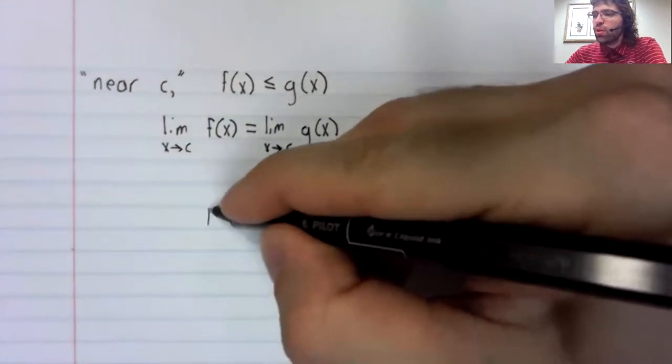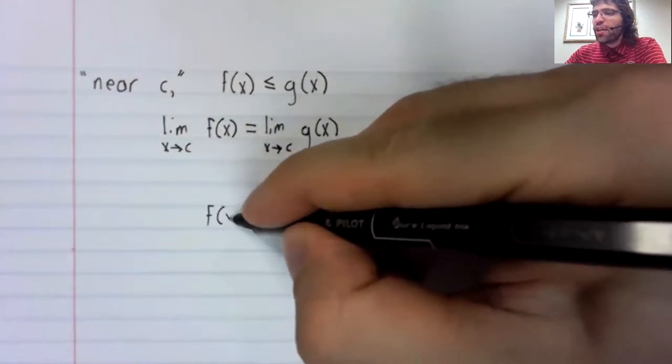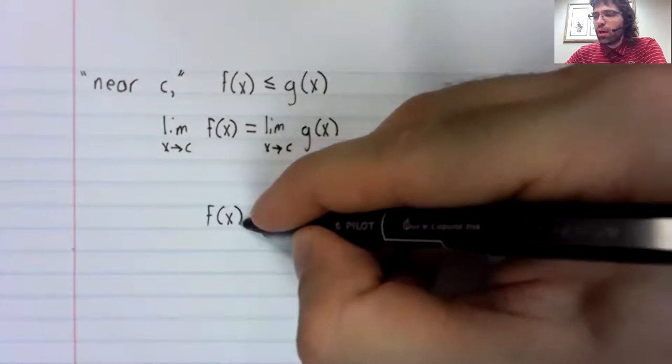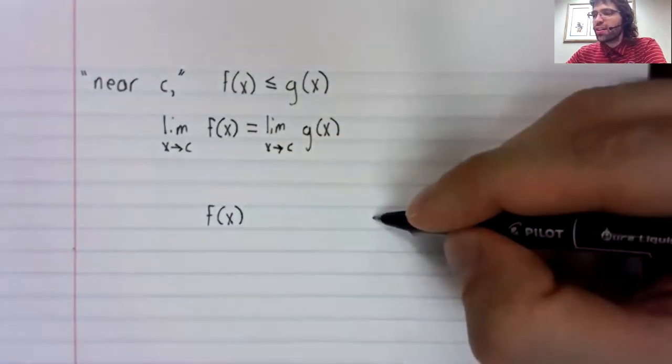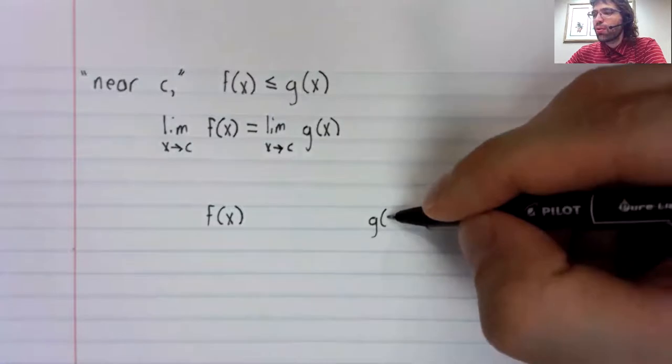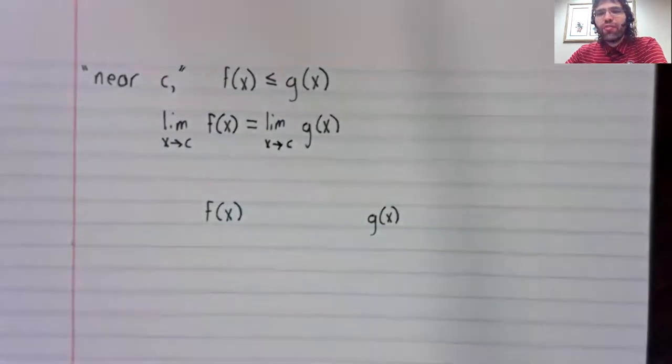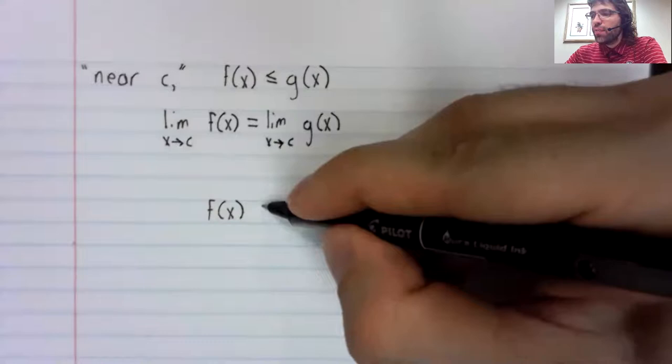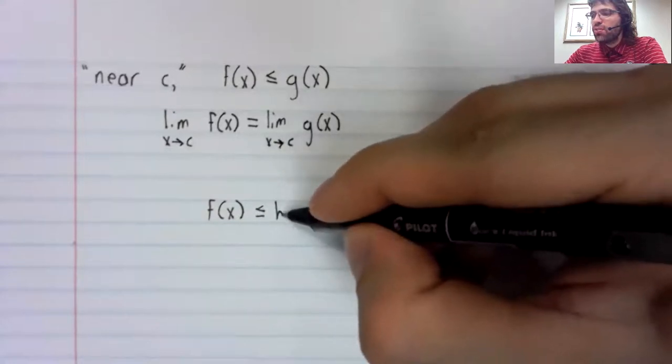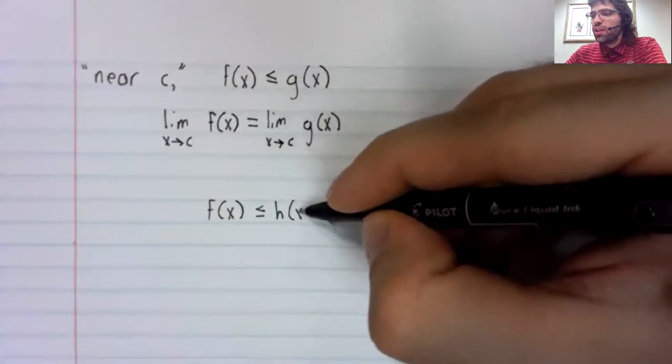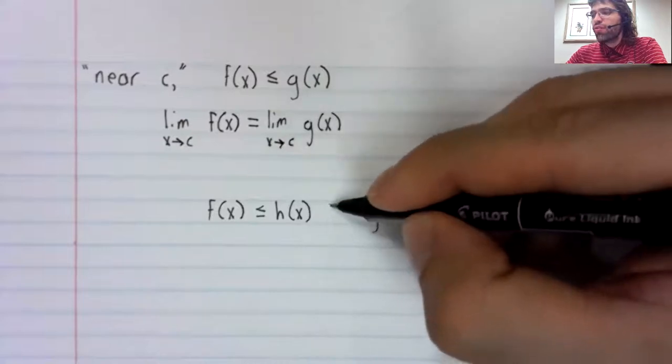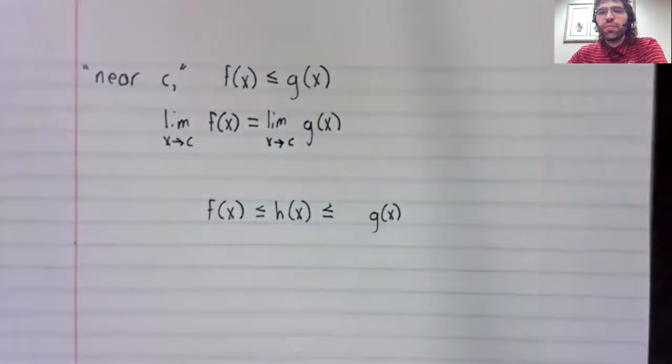Now suppose we have a medium function, as it were, between F and G. We squeeze in a third function, H.